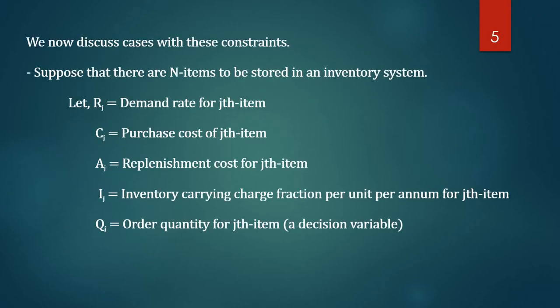Suppose there are N items to be stored in an inventory system. For the j-th item: demand rate is Rj, purchase cost is Cj, ordering or replenishment cost is Aj, inventory carrying charge fraction per unit per annum is Ij, and order quantity is Qj, which is the decision variable.